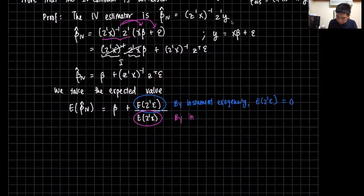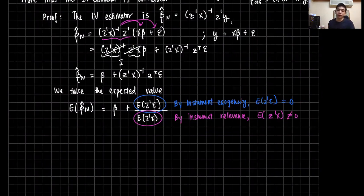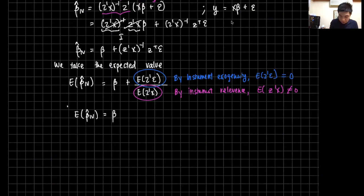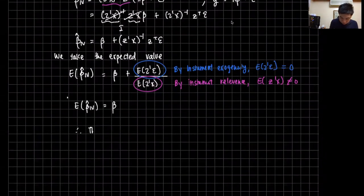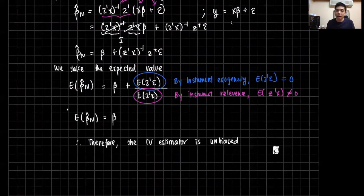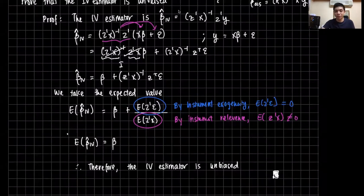That denominator term E[Z'X] is our first property: instrument relevance. By instrument relevance, the expected value of Z'X should not be equal to zero, because there must be some correlation between the regressors and the instrument. So something that is zero divided by something non-zero is zero. Therefore, E[β̂_IV] = β, which completes our proof. Therefore, the IV estimator is unbiased. That's the end of this video — I hope you were able to see how simple the proof was. Thank you very much for your attention.